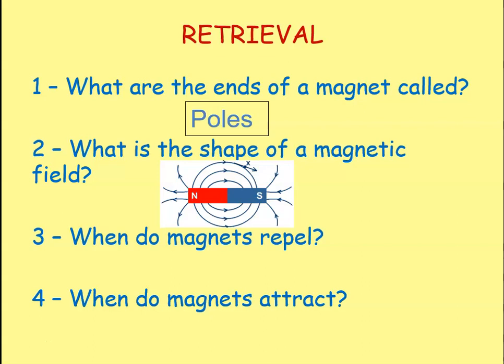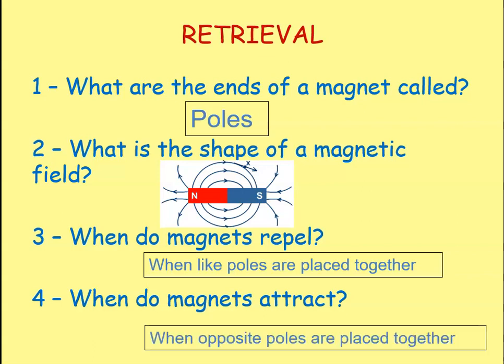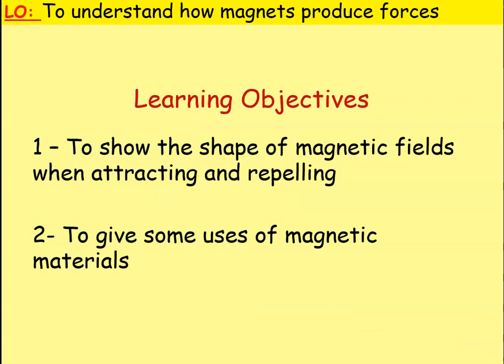Question three: when do magnets repel? Magnets will only repel when like poles are placed together — when south is placed next to south or north is placed next to north. Question four: when do magnets attract? They attract when opposite poles are placed together, so when north is placed towards south it will attract. We're going to look at field lines in a minute — copy that diagram into your book.